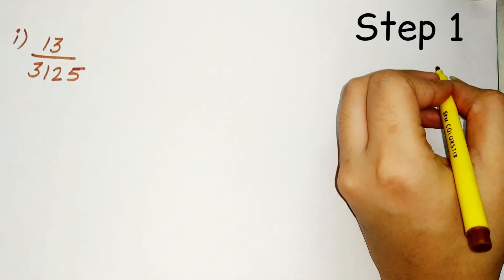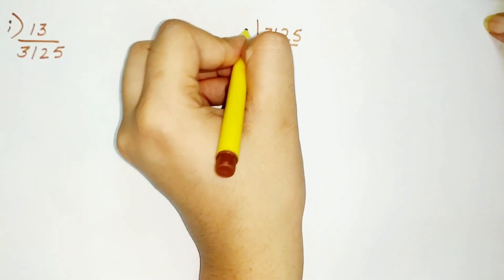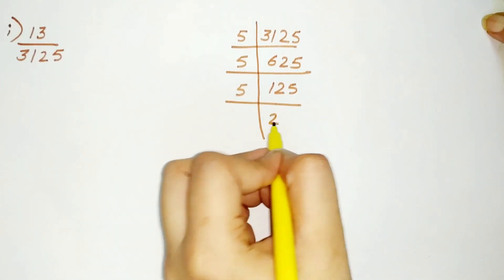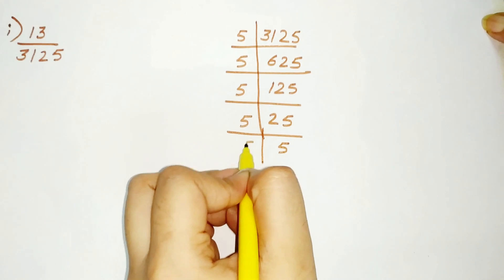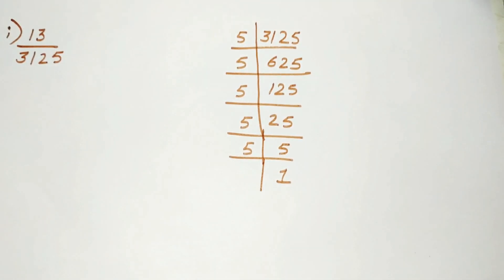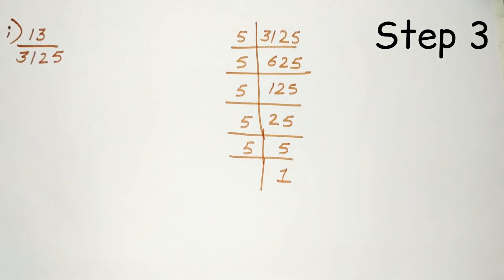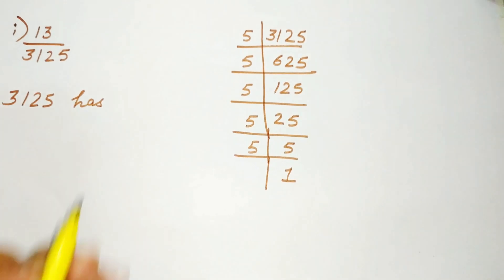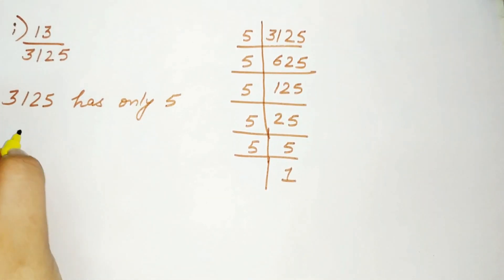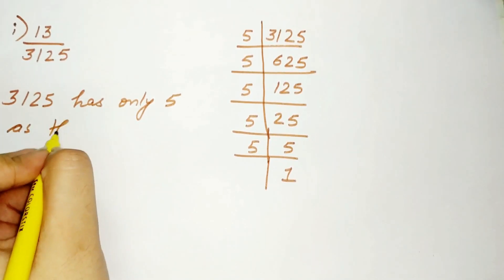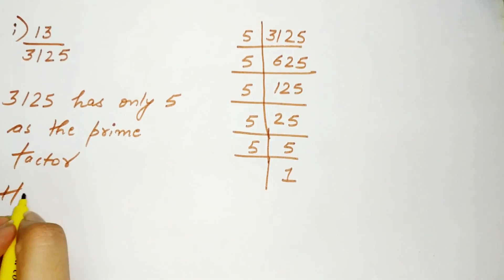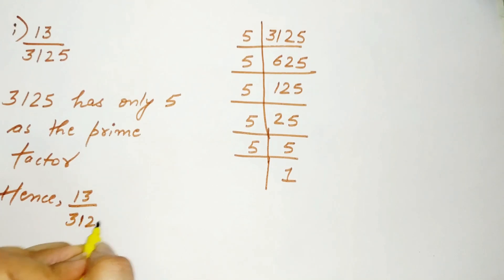First step: find out the prime factors of 3125. So 5 is the only prime factor of 3125, and thus it is a terminating decimal expansion. In the exam, do not forget to write down: 3125 has only 5 as a prime factor. Hence, 13 divided by 3125 is terminating.